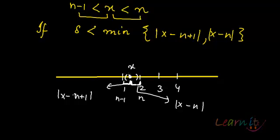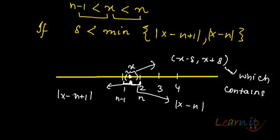that means this will be my neighborhood of x. This will be (x minus delta, x plus delta) which contains no integer.